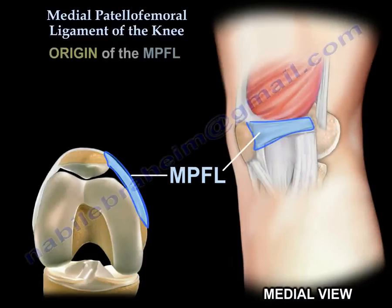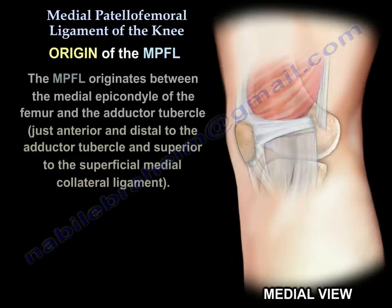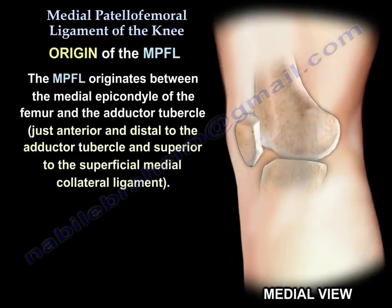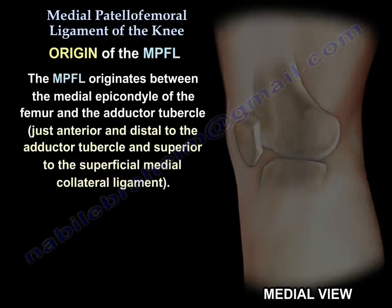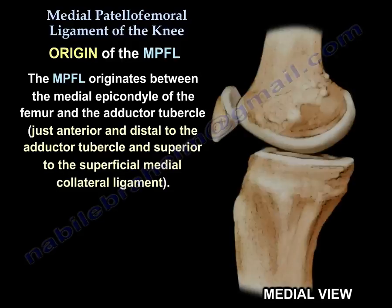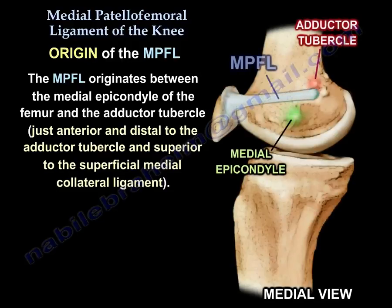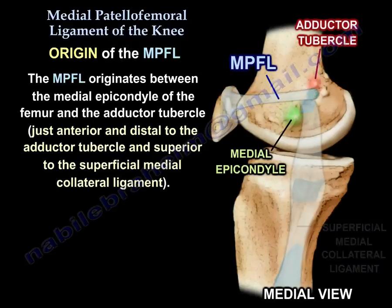It originates between the medial epicondyle of the femur and the adductor tubercle, just anterior and distal to the adductor tubercle, and superior to the superficial medial collateral ligament.